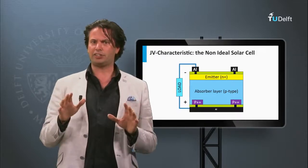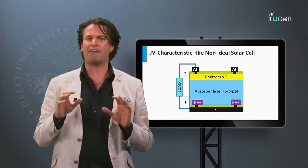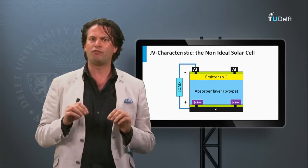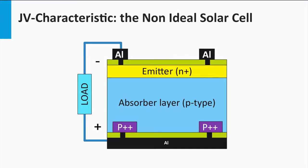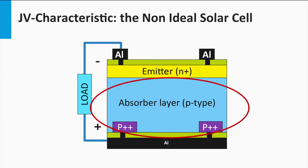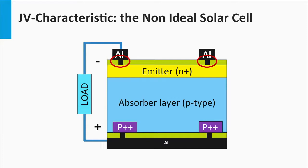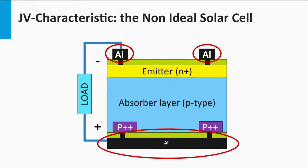The first resistance is called series resistance. Several effects can be the origin of a series resistance in a solar cell. Let's consider a standard crystalline silicon solar cell. First, the current moving through the semiconductor materials of the p-n junction can experience a resistance. Secondly, the interface between the semiconductor material and the metal contacts can act as a resistor as well. Thirdly, the metal contacts will have a resistance as well.